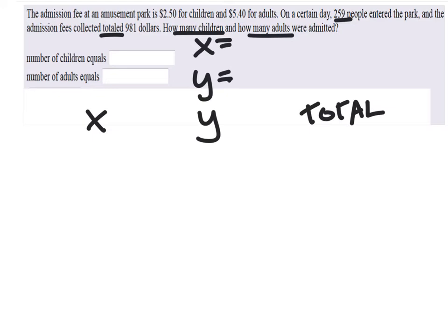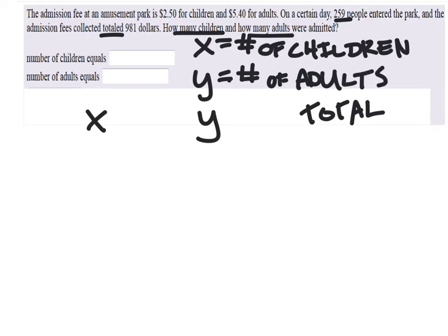So I'm going to say X, not that it matters which is which, but I'm going to say that X is number of children, and then Y is the number of adults. And it's okay to start with those two definitions too.